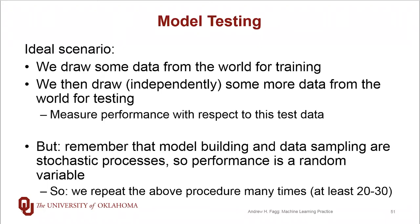In practice in the machine learning world, we tend to work in the range of 20 to 30 samples, and there are statistical reasons for doing that. If data are really easy to come by, this is the type of approach we would use.